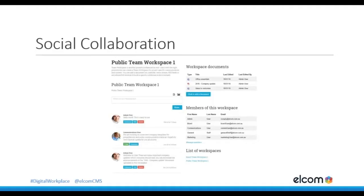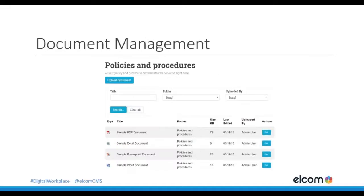There are many benefits to adding a social collaboration space to your intranet, including providing team members with a voice and a way to contribute to a project or the organization. It also helps build the culture and make people who are based remotely feel part of the organization. Document management is another key area. Adding a document list library to the intranet makes it easy for users to upload, share and collaborate on documents.